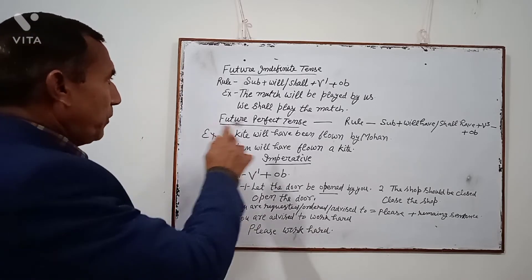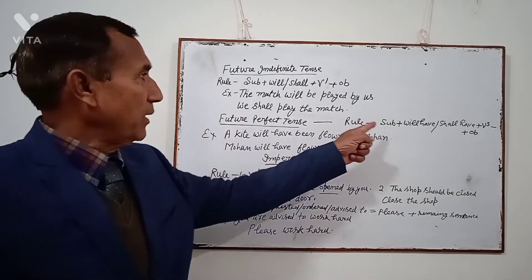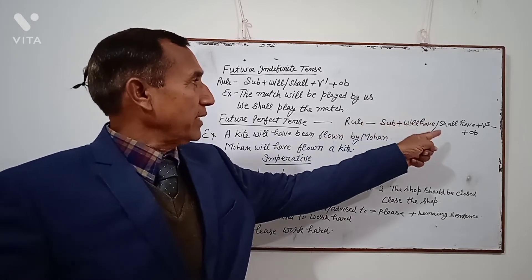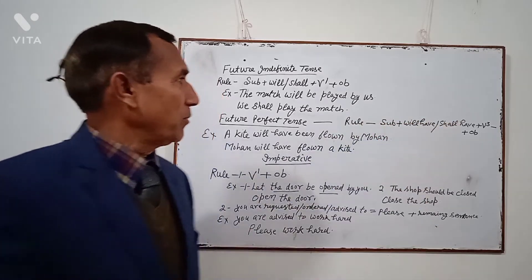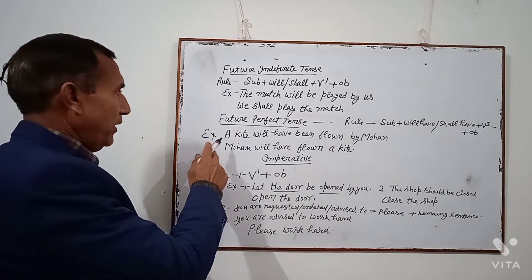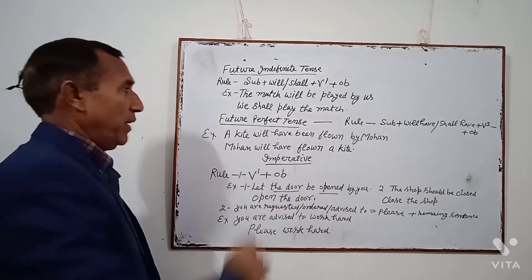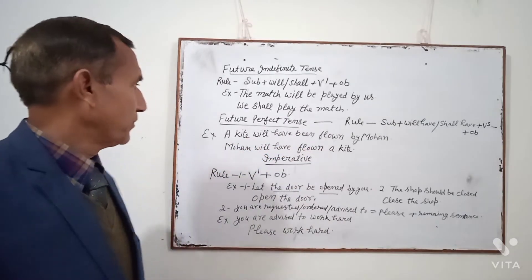Future Perfect Tense. Rule: Subject + will have/shall have + V3 + Object. Example: 'A kite will have been flown by Mohan.' Active: 'Mohan will have flown a kite.'